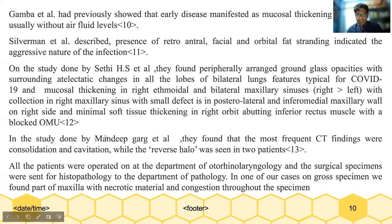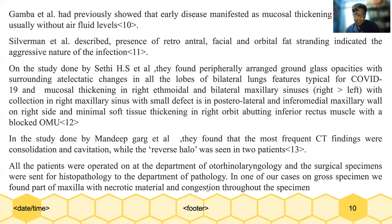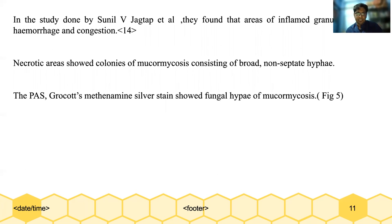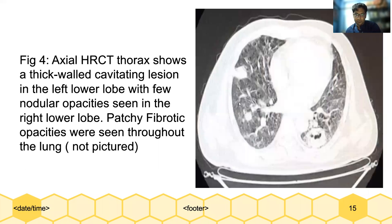In a study done by Mandip et al., they found that the most frequent CT findings were consolidation and cavitation, with reverse halo sign seen in two patients. All were treated at the department of otorhinolaryngology, and the surgical specimens were sent to histopathology. In one gross specimen of maxillary sinus, necrotic material with congestion was seen throughout the specimen. In a study done by Sunil et al., they found that areas of inflamed granulation tissue, hemorrhage, and congestion were seen in the gross specimen. Necrotic areas showed colonies of mucormycosis consisting of broad non-septate hyphae. PAS and Grocott-methenamine silver staining also showed fungal hyphae of mucormycosis.